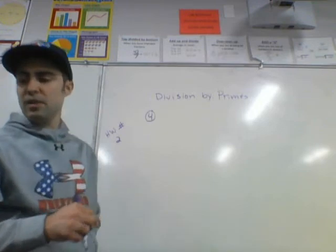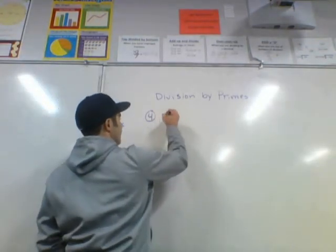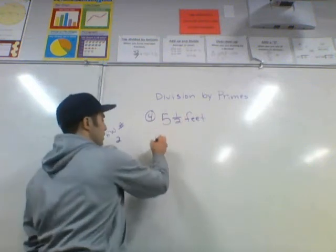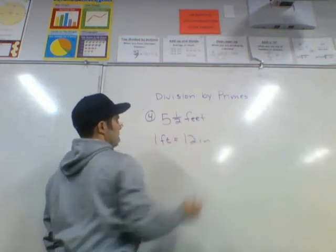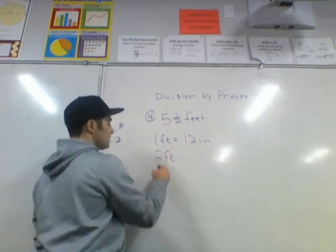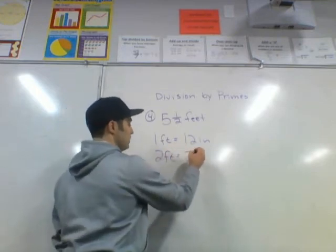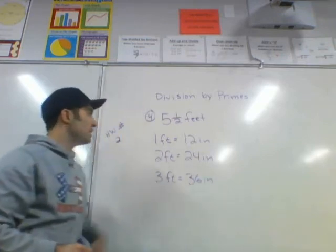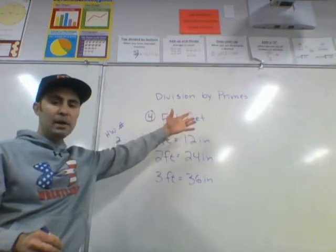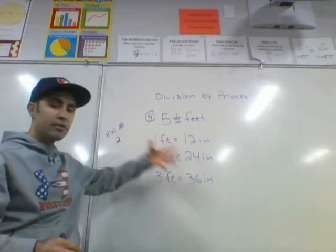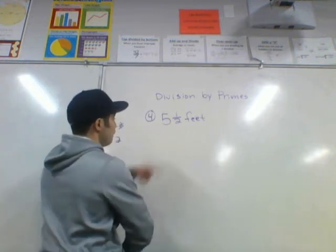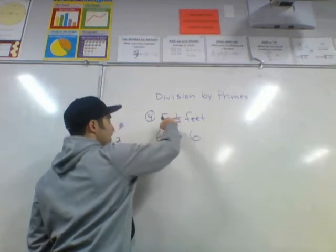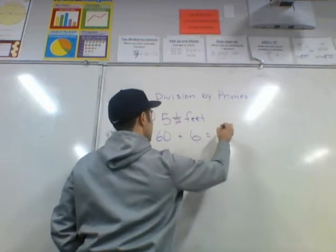Number 2 on your homework says a rhinoceros is 5 and a half feet tall, and we need to convert that to inches. Since every foot is 12 inches, we multiply by 12. Some people can do this quickly in their head: 5 times 12 is 60, and half of 12 is 6, so 60 plus 6 equals 66 inches.